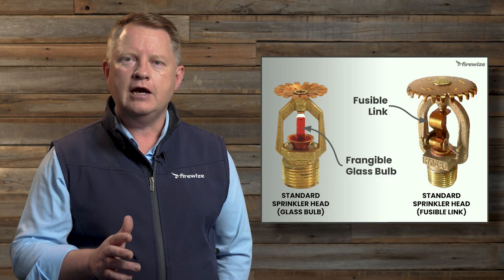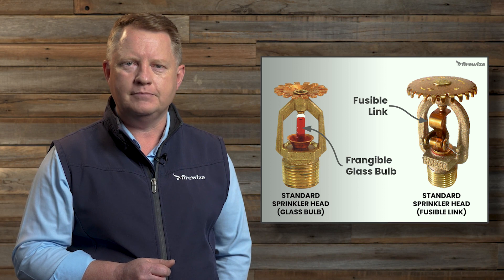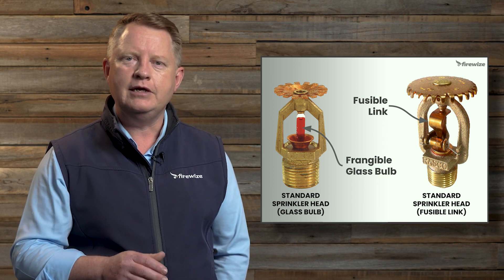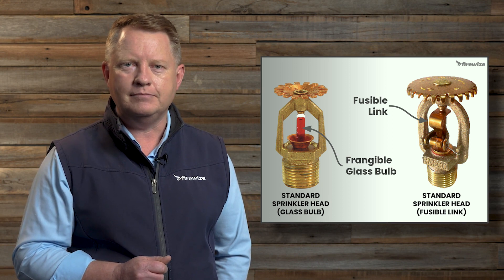In addition to glass bulbs used as part of a sprinkler head, another option you might see is a fusible link. A fusible link is a two-part metal element that is fused together by a heat-sensitive alloy. These sprinkler heads operate when the ambient temperature reaches or exceeds the activation temperature of the alloy. When the alloy melts, it releases the valve assembly. The operating temperature of these sprinkler heads is normally etched or embossed into the sprinkler head and may also be indicated by the same colour system as used for glass bulb type sprinkler heads.